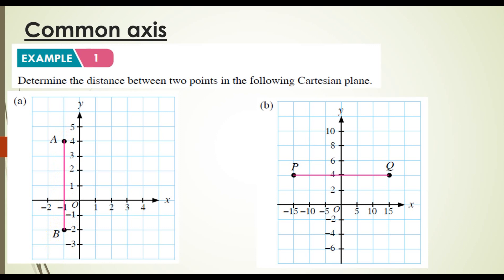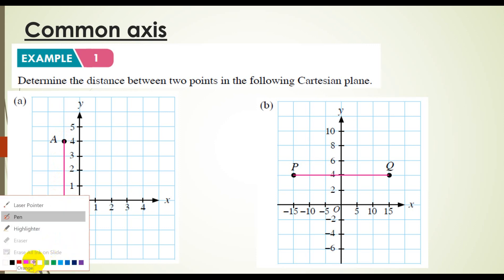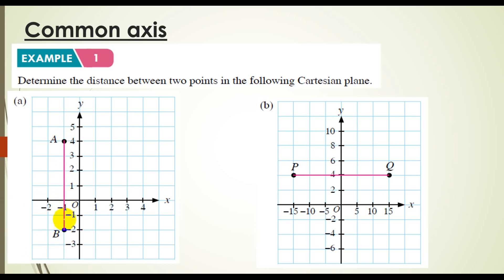Cikgu tulis kat sini. So B, koordinat dia adalah negative 1, 2. A ni, koordinat dia adalah negative 1, 4. Kalau awak tengok kat sini — negative 1 dan negative 1 — dia sama kan? Kalau dia sama, itu kita panggil dia common axis. Macam mana nak tahu jarak dia? Ada 2 cara: sama ada awak kira je kotak ni — jarak daripada AB adalah 1, 2, 3, 4, 5, 6 — kalau dia bagi kotak, senanglah awak nak kira. Maknanya jarak dia adalah 6.